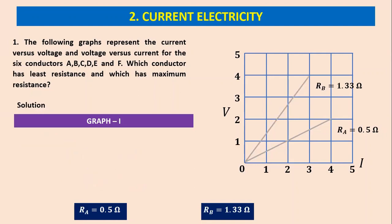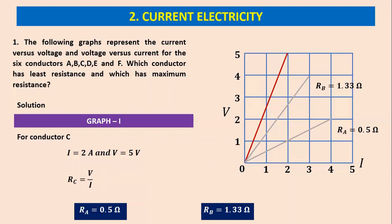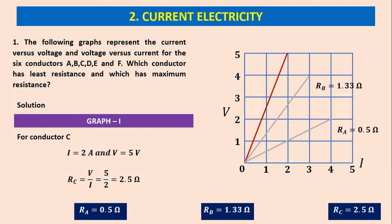Let us go for the third conductor. The straight line meets a coordinate (2, 5) — the current is 2 amperes and the voltage is 5 volts. For conductor C, its resistance is 5 divided by 2, which is 2.5 ohms. R_C is greater than R_B.